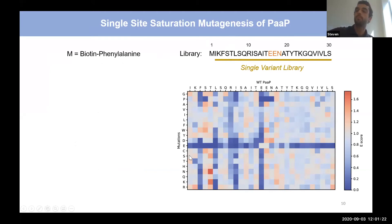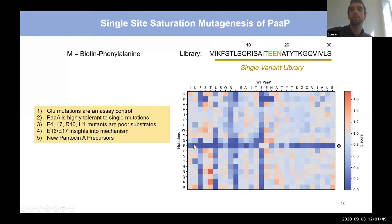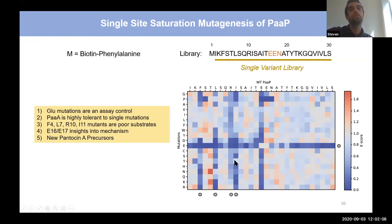A few things we noticed right away. First, a blue bar of glutamic acid mutations all along the leader and follower confirms our GluC selection is working, since introducing a glutamic acid at any position causes cleavage regardless of modification. Second, many positions tolerated single mutations very well — PaaA is very tolerant of mutations, especially in the follower sequence. Alternatively, four positions in the leader — F4, L7, R10, and I11 — performed consistently poorly when mutated, suggesting these are the residues that make up the recognition motif for binding between substrate and enzyme.